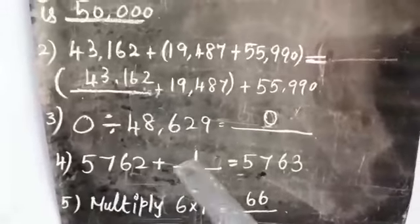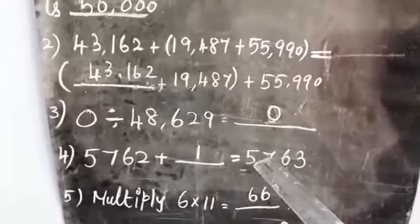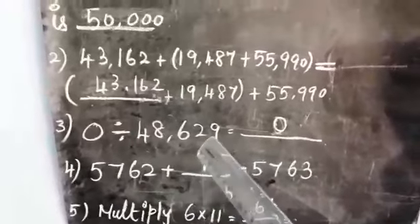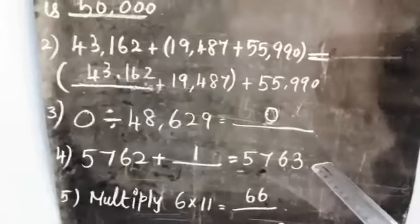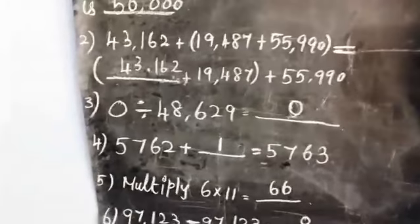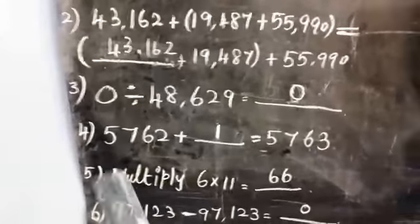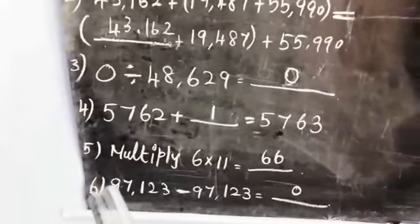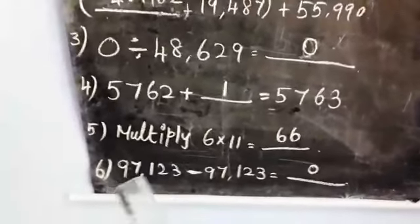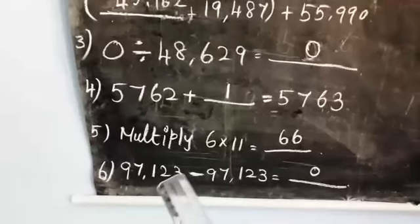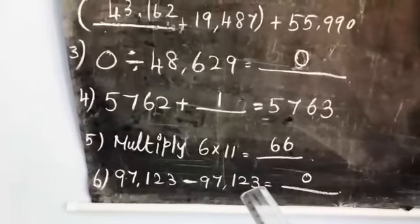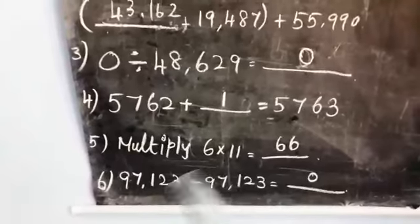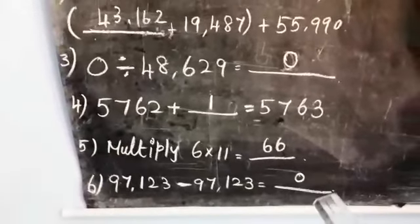5,762 + 1 = 5,763. When you add 1 to any number, you get the number just after the given number. Multiply 6 × 11: 66. And 97,123 − 97,123 — both numbers are the same, so we get the answer 0.